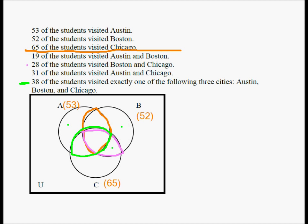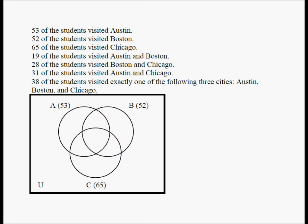Since we don't know how many students visited all three cities, we place x in the center of the Venn diagram. If the center is x, then the Austin-Boston only region must be 19 minus x. Arguing the same way, the Boston-Chicago only region is 28 minus x, and the Austin-Chicago only region is 31 minus x.